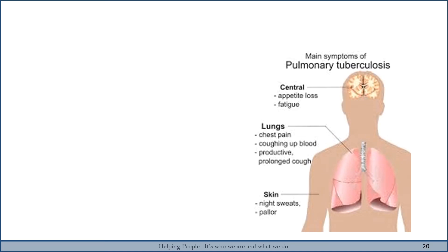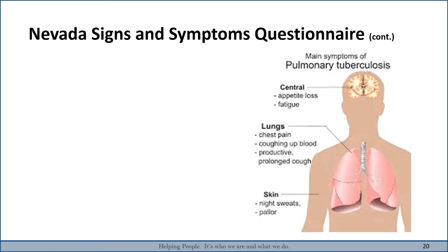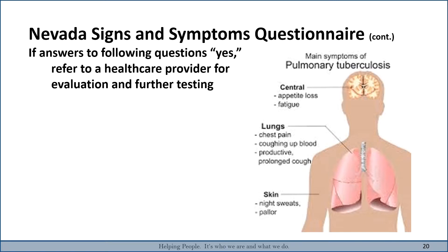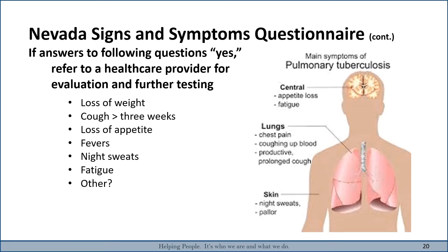The main symptoms of pulmonary tuberculosis include loss of weight. When completing the signs and symptoms assessment, you are asking about: cough greater than three weeks, loss of appetite, fever, night sweats, fatigue, and other symptoms.